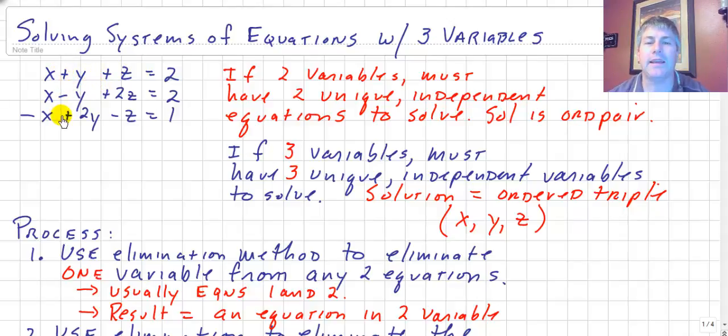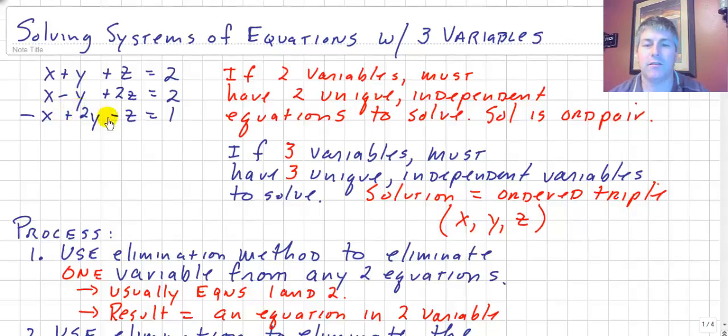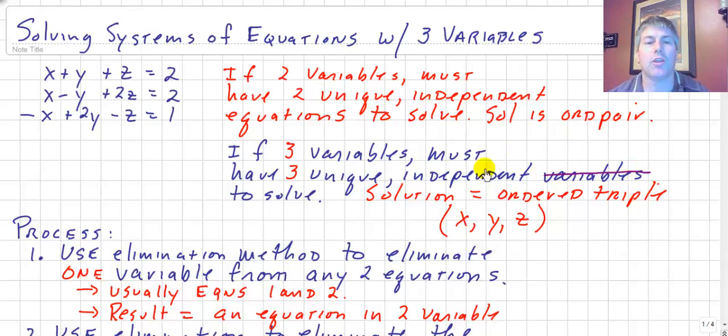then we need three unique independent equations, not variables. We need three unique independent equations to solve, and our solution won't be an ordered pair, but because we have three things, it will be an ordered triple. Here's an example of a system of equations in three variables. We have three equations.